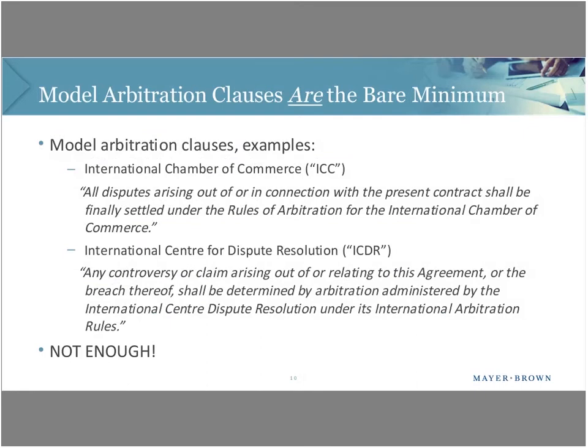Each international arbitration organization publishes model arbitration clauses. Looking at the ICC model: 'All disputes arising out of or in connection with the present contract shall be finally settled under the rules of arbitration of the International Chamber of Commerce.' This covers the three bare minimums — scope, exclusivity via 'shall,' and reference to the ICC rules. But this is not enough. If you stop here, you may end up in courts with extra expense. I'll now turn over to Hannah to explain what additional clauses can make an arbitration provision workable.